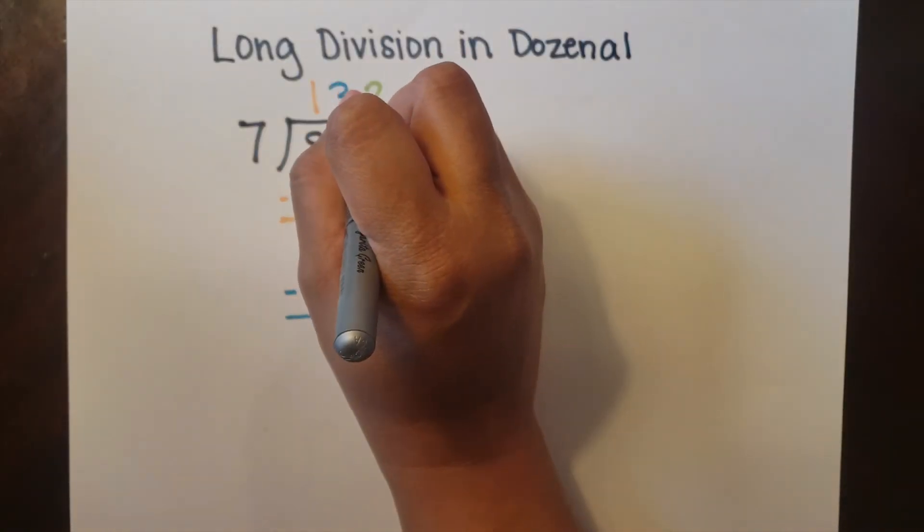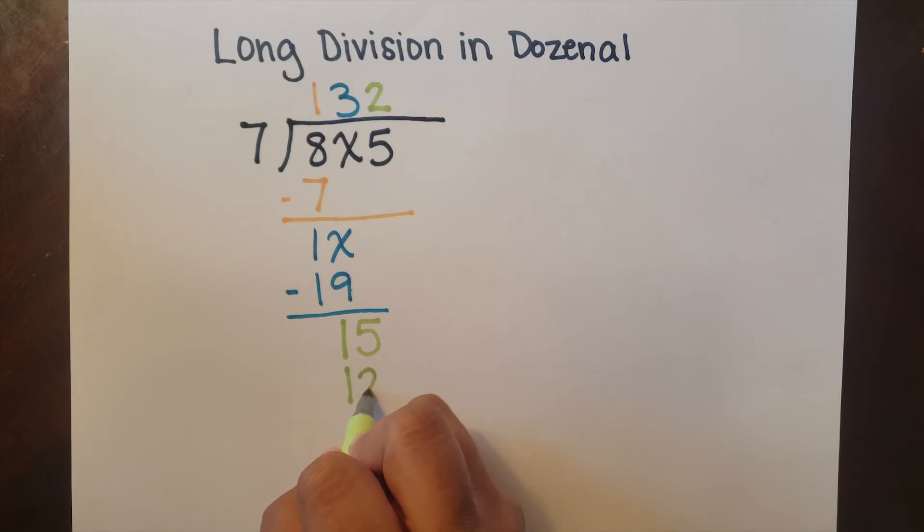Now seven will fit into one doe five two times. Seven times two is one doe two. I subtract that and I get three.